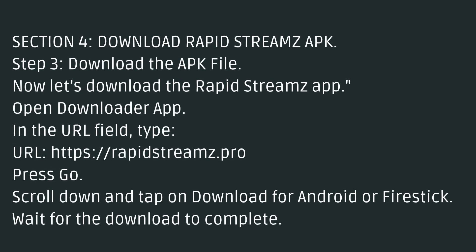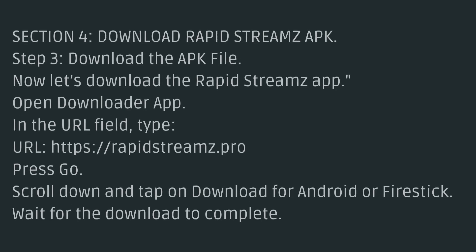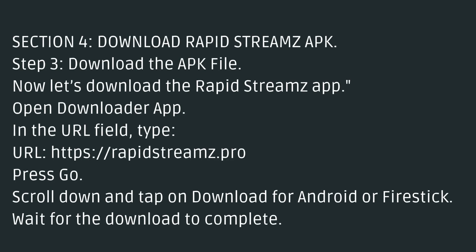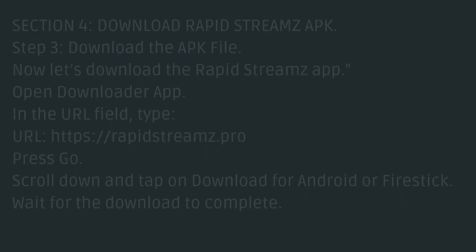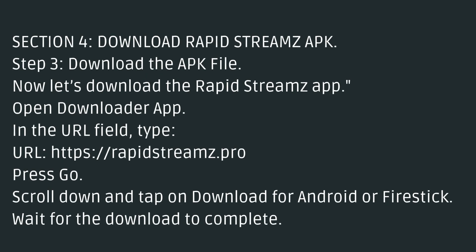Section 4: Download the RapidStreams APK. Now let's download the RapidStreams app. Open the Downloader App, and in the URL field, type the URL and press Go. Scroll down and tap on Download for Android or Firestick. Wait for the download to complete.